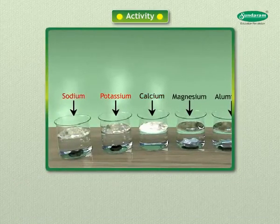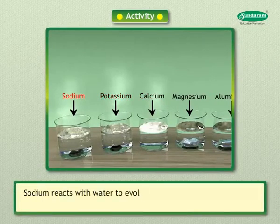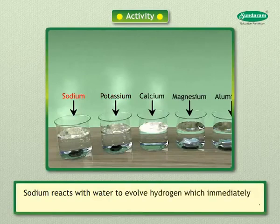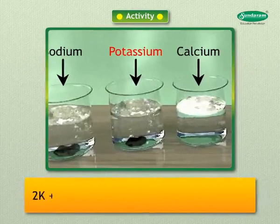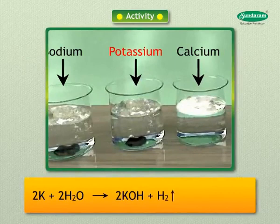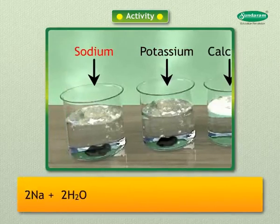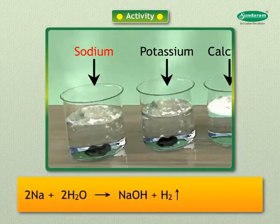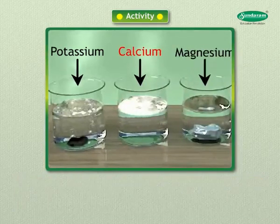Metals like potassium and sodium react vigorously with cold water. Sodium reacts with water to evolve hydrogen, which immediately catches fire, producing a lot of heat — this is an exothermic reaction. 2K + 2H₂O → 2KOH + H₂ + heat. 2Na + 2H₂O → 2NaOH + H₂ + heat.